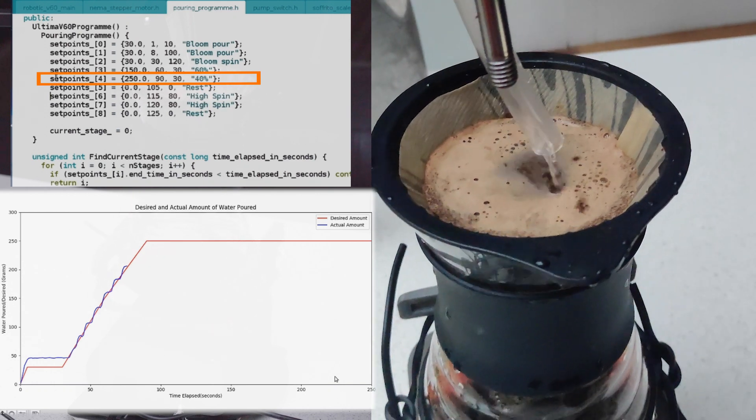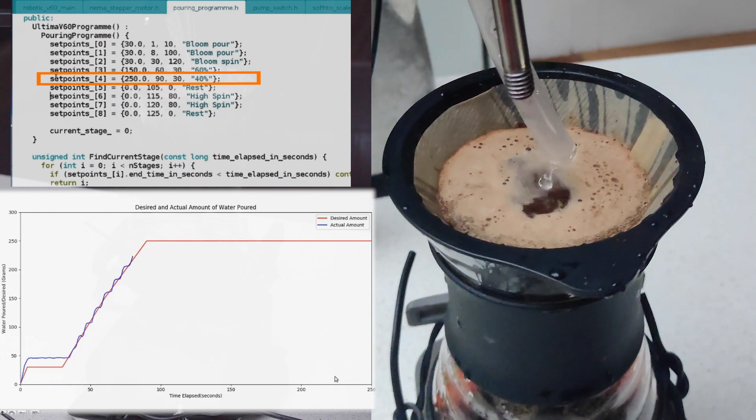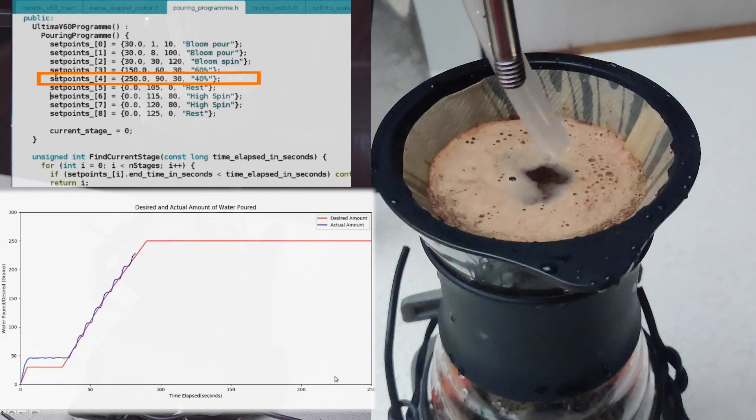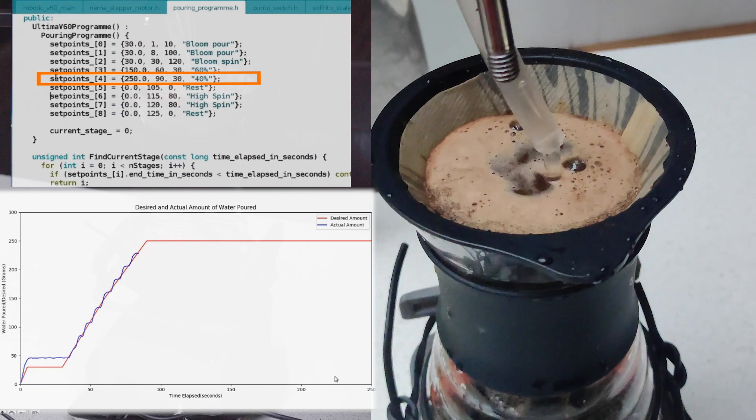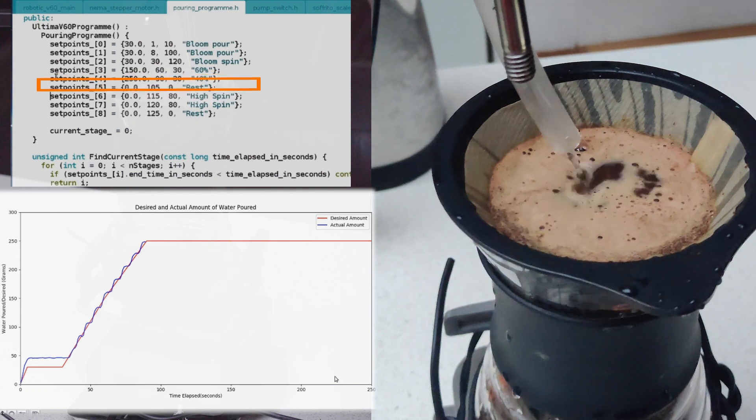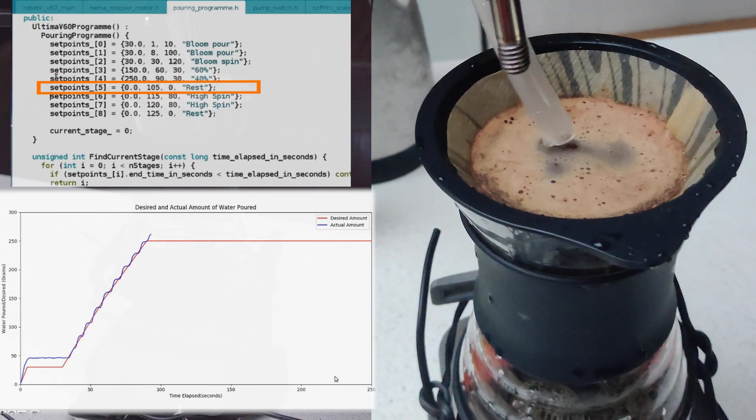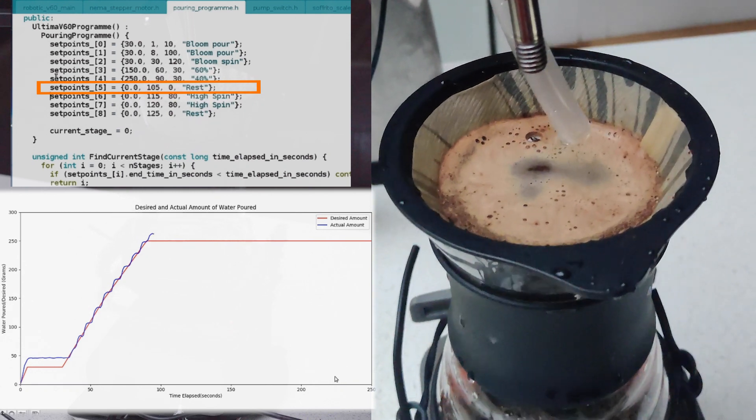We see the same behavior at the beginning during the blooming phase where the blue line is steeper than the red line and because of the delays there are in my control loops we see the overshoot behavior both during the beginning at the bloom phase and also here at the end where we actually poured roughly 270 grams of water instead of 250.